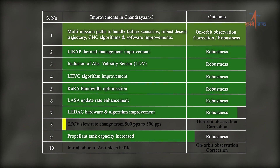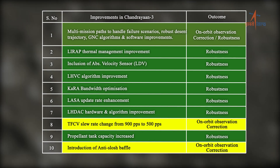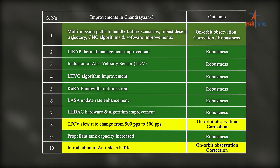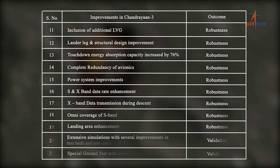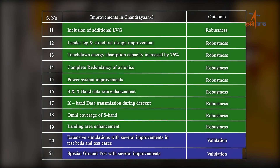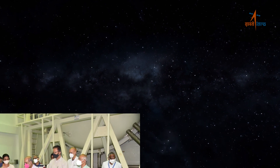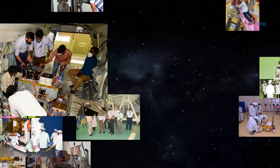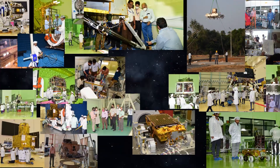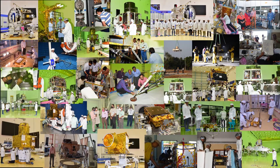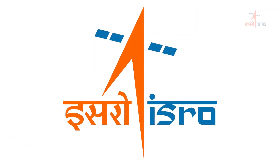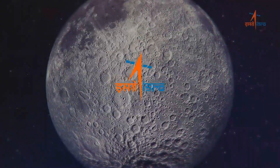All different domains of the Chandrayaan-3 mission — hardware, software, guidance algorithm, mission planning, contingency management, landing strategy, autonomy, characterization of landing site, ground tests, and computer simulations — have been reviewed at length. The outcomes of all reviews, simulations, and tests have been utilized to incorporate necessary improvements to enhance the robustness of the system. The recommendations of national-level experts and the untiring effort of the entire ISRO team have made us confident in successfully flying the Indian flag on the Moon with Chandrayaan-3.